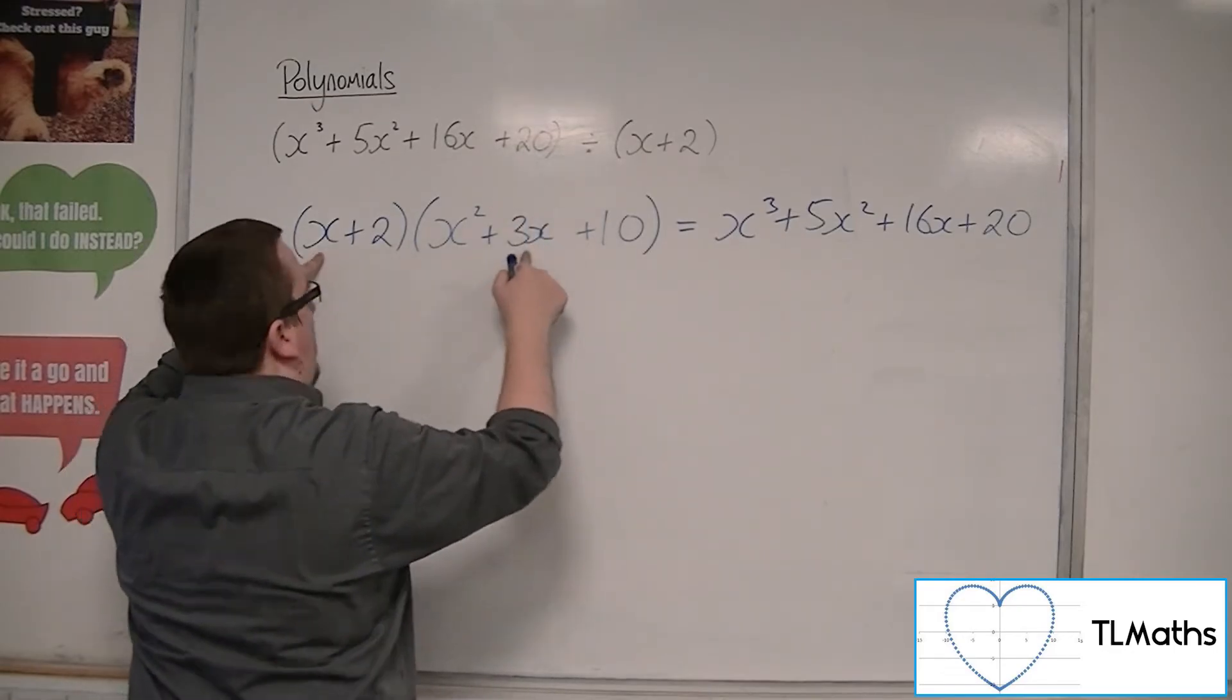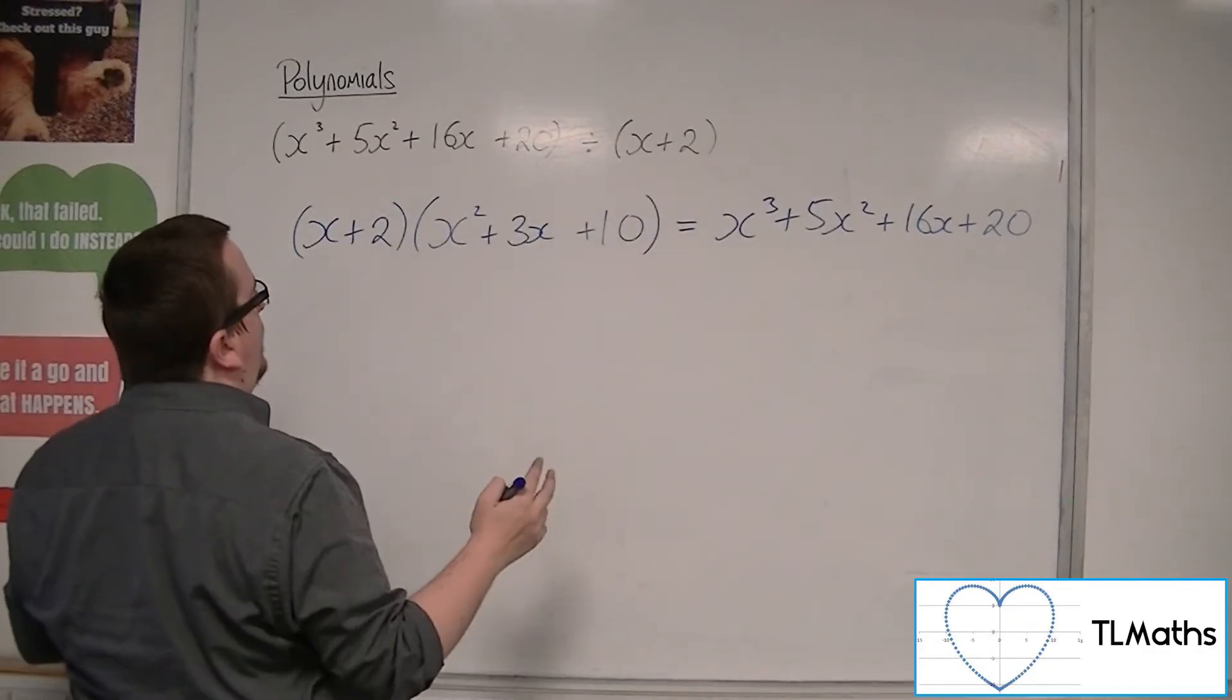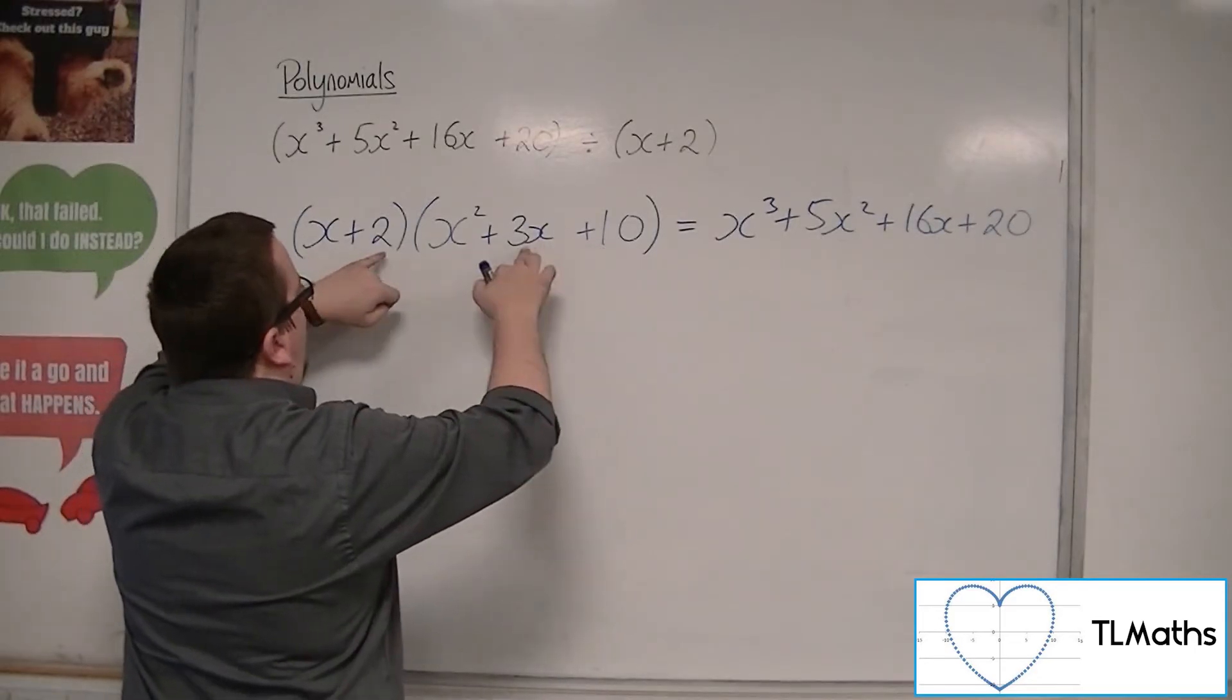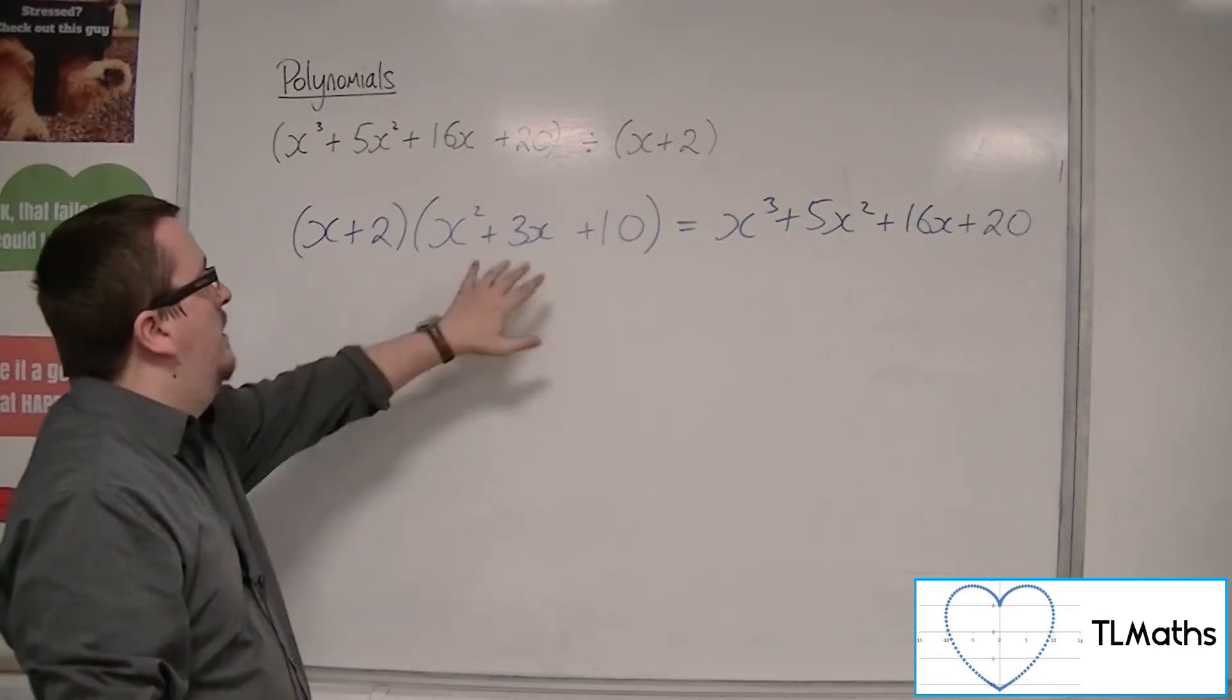2x squared plus 3x squared makes the 5x squared. And let's check that we can get the 16x. So x times 10 is 10x, and then 2 lots of 3x is 6x, so 16x. So there we are.